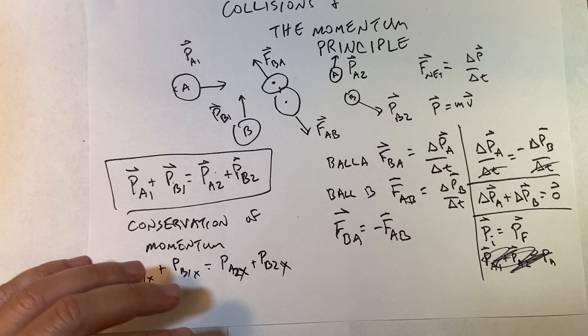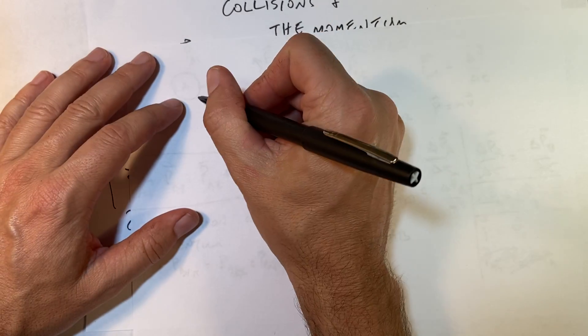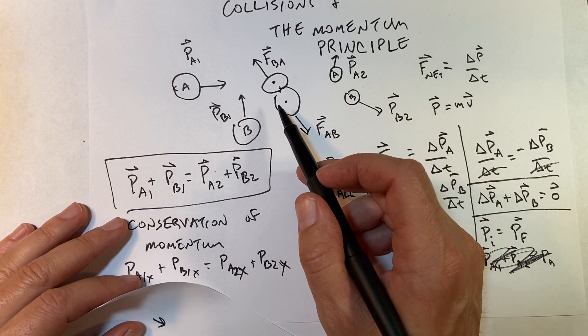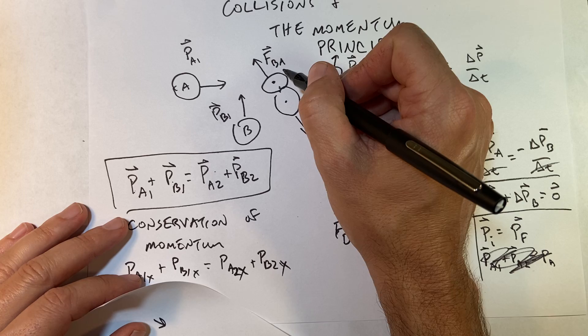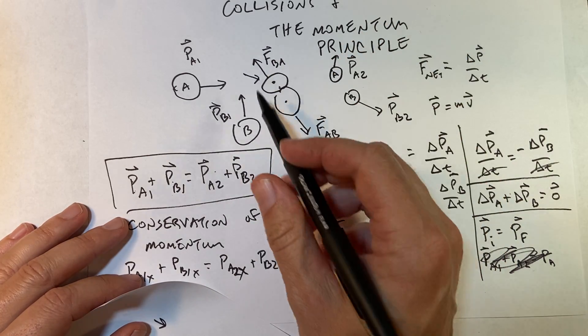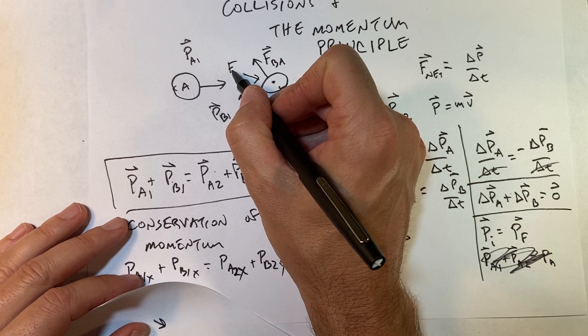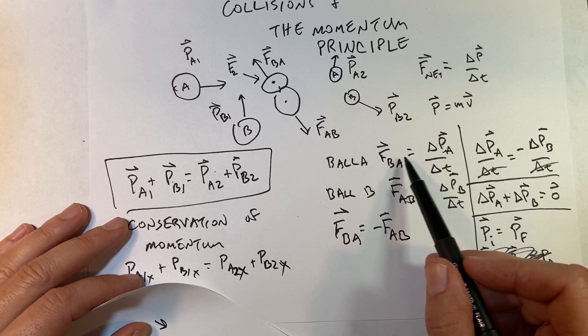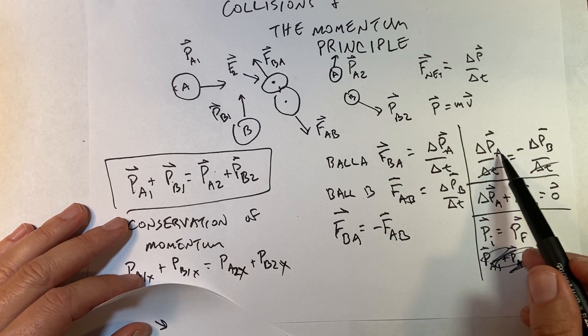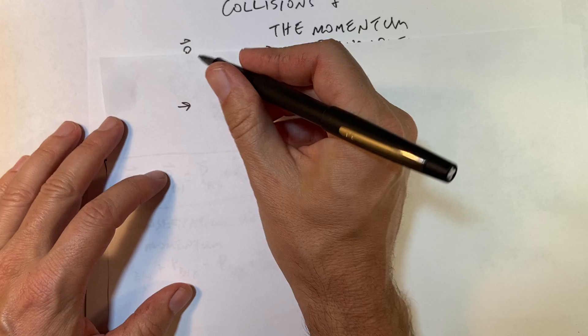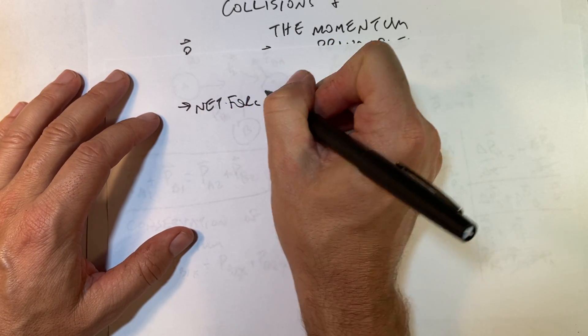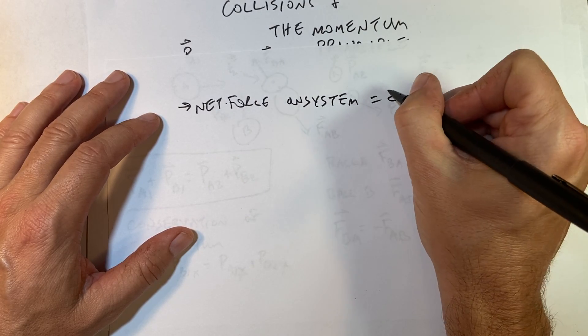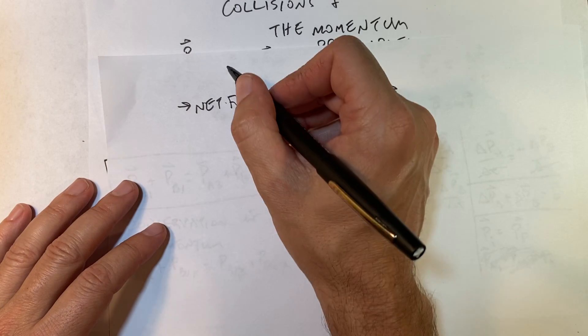So that is conservation of momentum. Let's write down some key things. When would this not be true? Well, what if there was some other force acting on A? In that case, this would have another force on it, but the thing is that these would not be the same. Okay, so if net force on the system equals zero vector, then momentum is conserved.